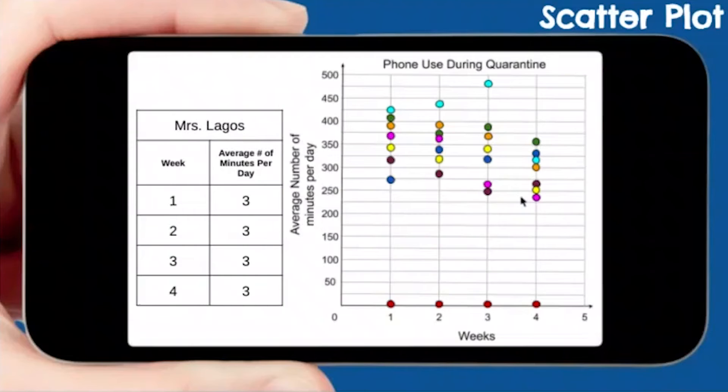See if you can guess what Miss Lagos is. Miss Lagos apparently does not like her cell phone. She spends an average of three minutes, maybe just calling somebody during the day. Very little on her cell phone. So three minutes. It's going to be this red down here. That's the only one way down here. Miss Lagos is the outlier.